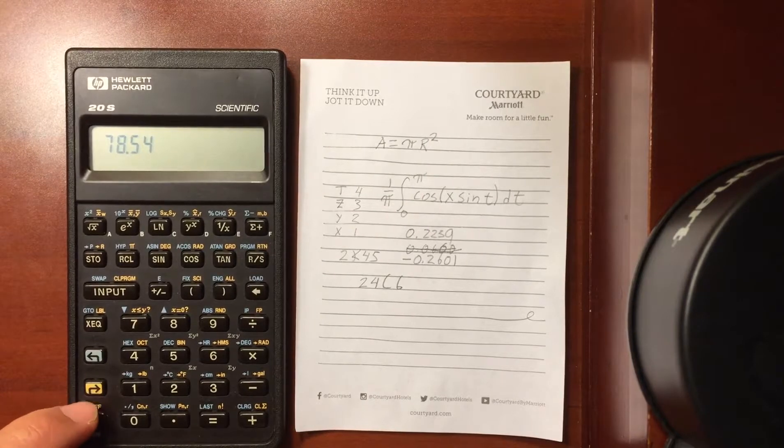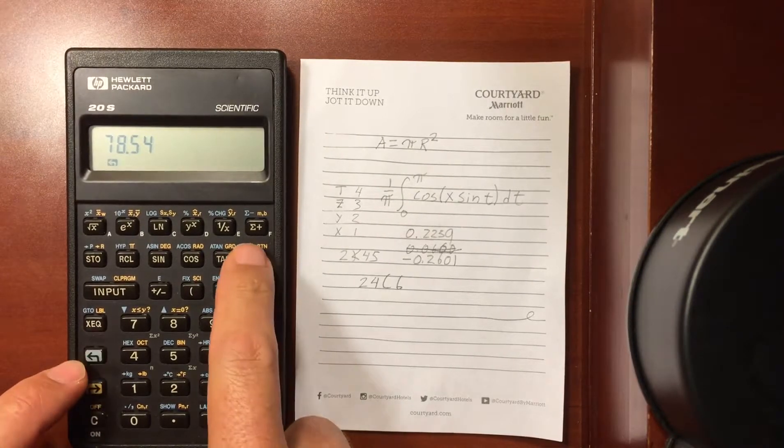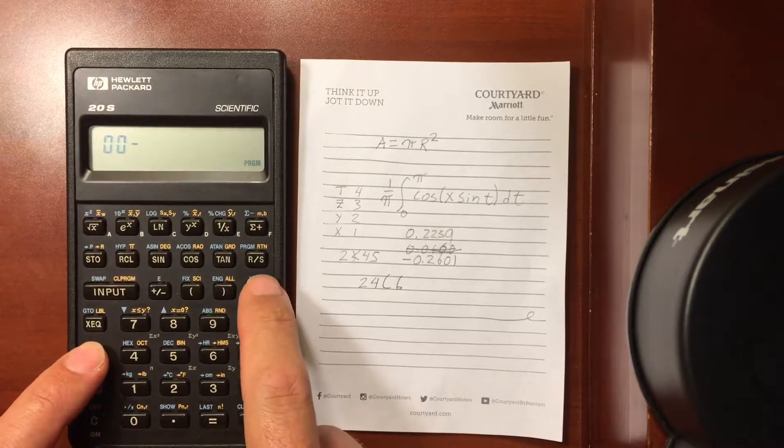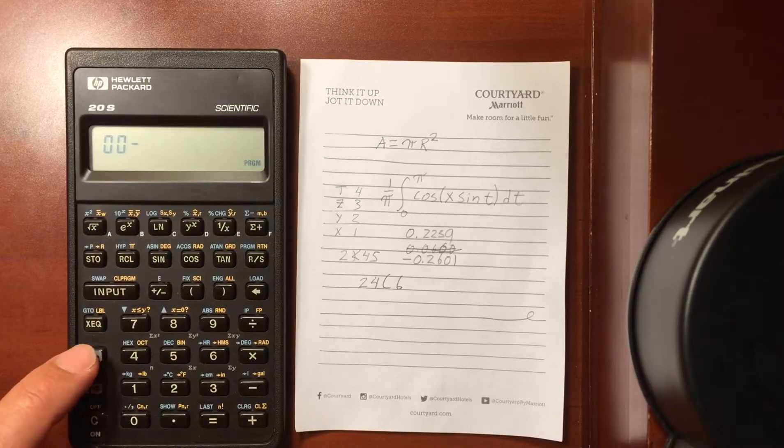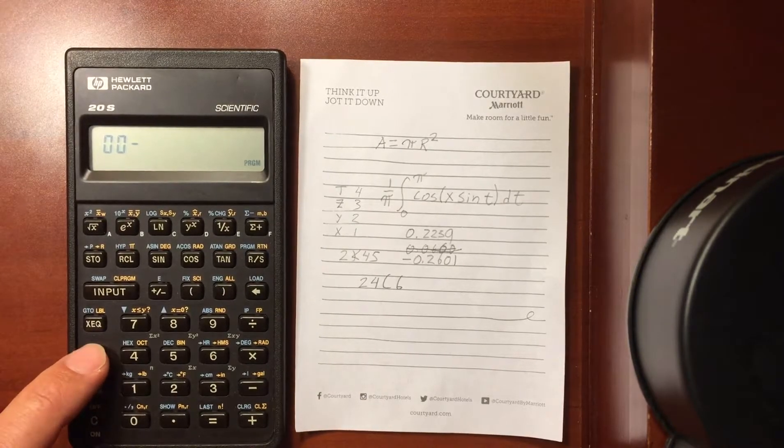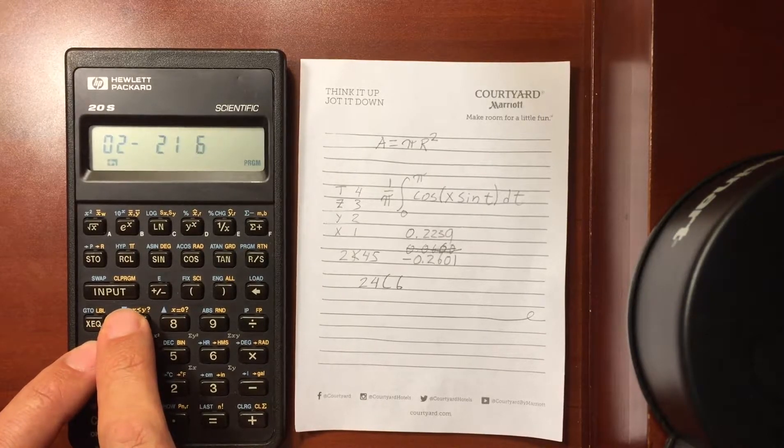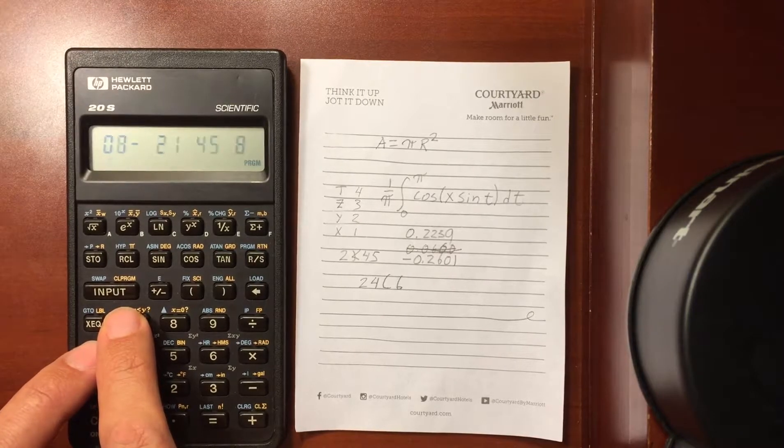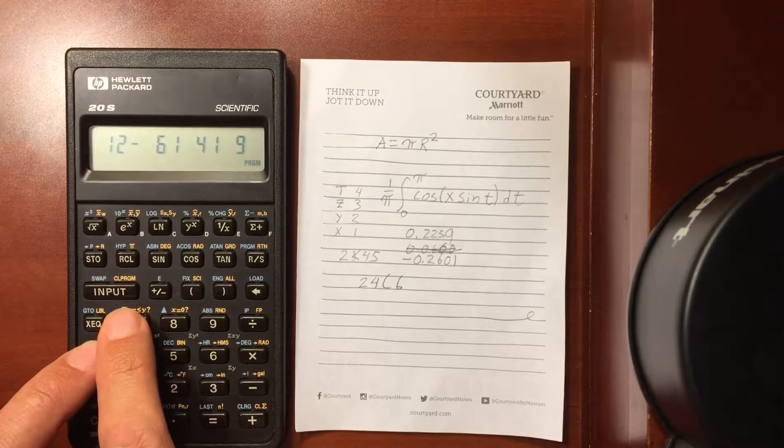Now, the bad thing about this is these programs that I've entered. If I go into my program space and then I load one of the built-in programs, so say I want to load the root finder. Well, guess what? Now, label A is something different. It is the program for the root finder. My two programs that I entered are gone.